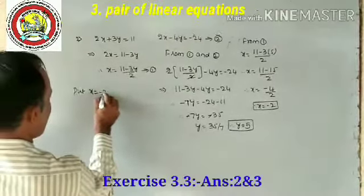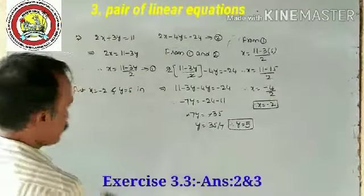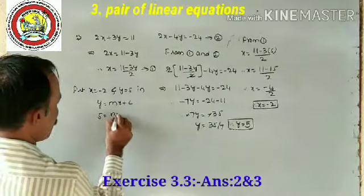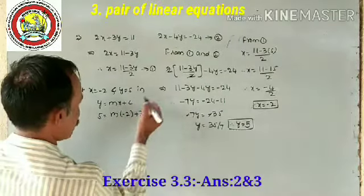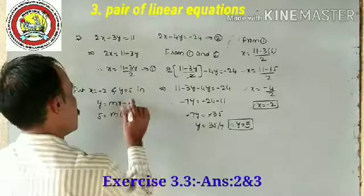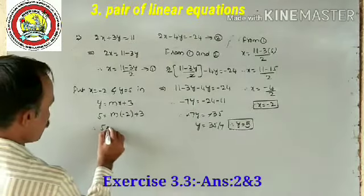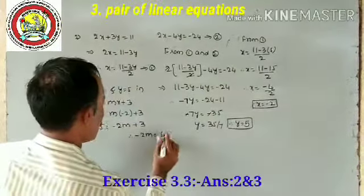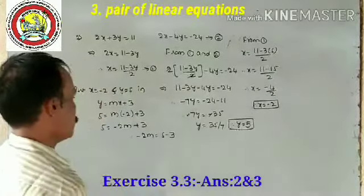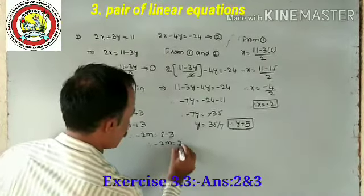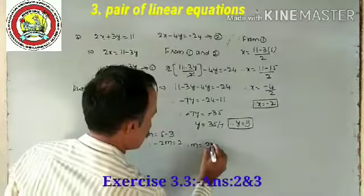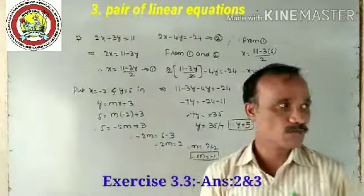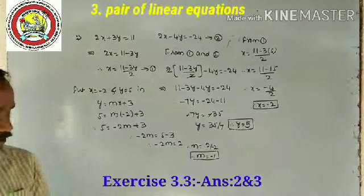Now substitute x = -2 and y = 5 into y = mx + c, where c = 3. So 5 = m(-2) + 3, which gives 5 = -2m + 3. Therefore -2m = 5 - 3 = 2, so m = 2 / -2. The value of m is equal to -1. This is the procedure.